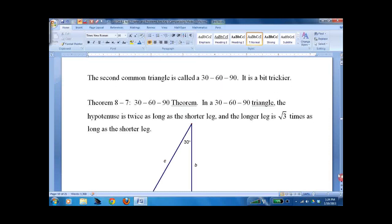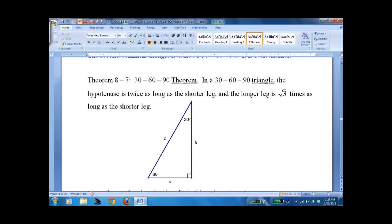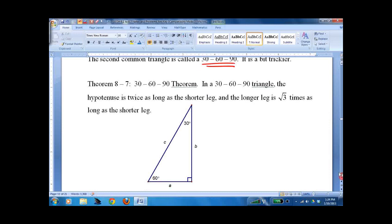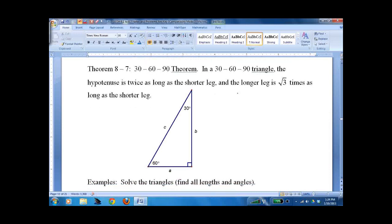Now 45, 45, 90, you really only had to memorize that one or two things. The second triangle is a 30, 60, 90, it's a little bit trickier. You can read the theorem if you want, here's what I do.